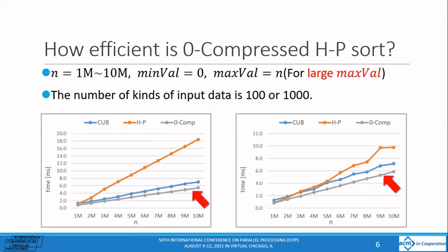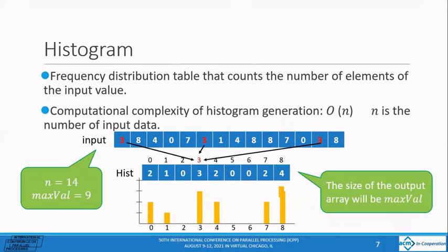Because the max val is large, HP-sort is slower than cub-sort. On the other hand, the zero-compressed HP-sort is faster than the cub-sort because of the small number of kinds. Before explaining the algorithm of HP-sort and zero-compressed HP-sort, I will explain about histogram and prefix sums.